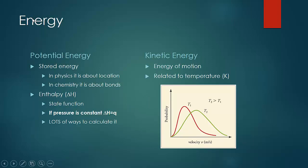Energy is the ability to do work. In 8th grade, you learned that there are two types of energy: energy of motion, known as kinetic energy, and potential energy, energy that's stored. Kinetic energy, energy of motion, is related to temperature. Kinetic energy and temperature in Kelvin, we're going to think of them as synonymous — they're very close, they're related to one another.